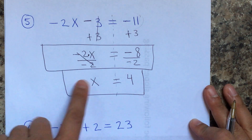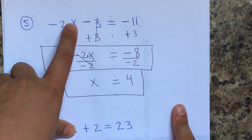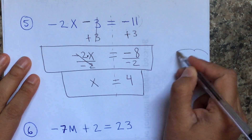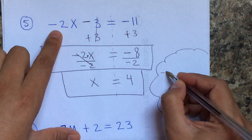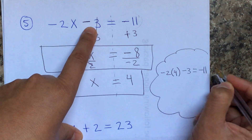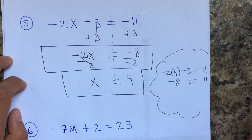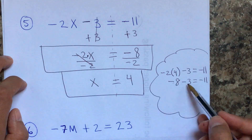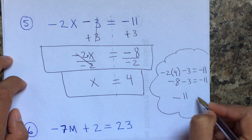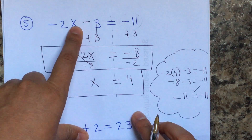Let's check: negative 2 times 4 is negative 8, and negative 8 minus 3 is negative 11. Same sign, we add and keep the sign of the greater: negative 8 minus 3 gives negative 11, which equals negative 11. Check — correct! To summarize: replace x with your answer and just apply PEMDAS.